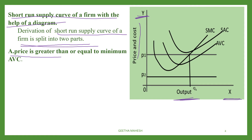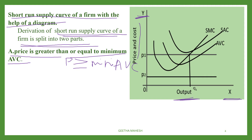The first part is: price is greater than or equal to minimum of AVC. The second part will follow. So the derivation is divided into two divisions, and the first condition is price ≥ minimum of AVC.